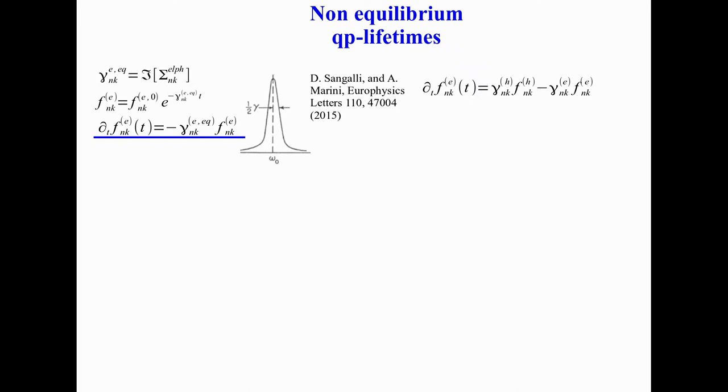The population is reduced in time by the electronic lifetime, and this describes what are called the out processes. But there is also another term, which is zero at equilibrium, which describes the processes of electrons jumping into the level, because there can be electrons in other points of the band structure. If I want something which matches this idea, I can simply divide and multiply by the electronic occupation and write an effective equation with this lifetime, which now has this form and will be time-dependent.